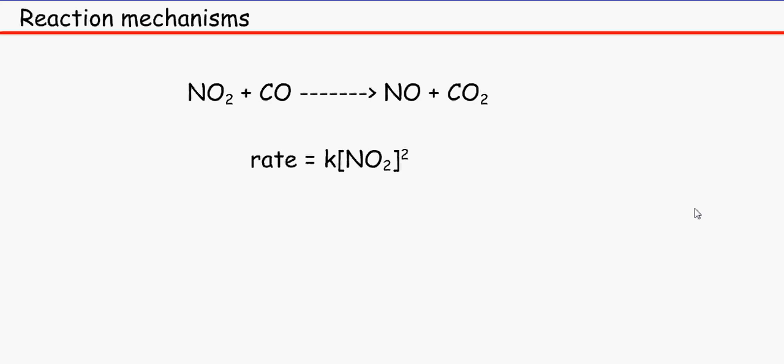So, we've got the rate here. This rate tells us what is required in the slow step or the rate determining step. Only this is required. Because this is the rate over here. The rate equation tells us about the slowest step.